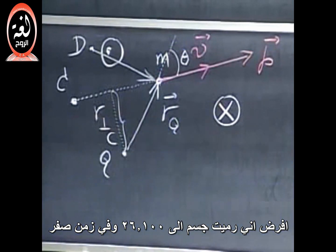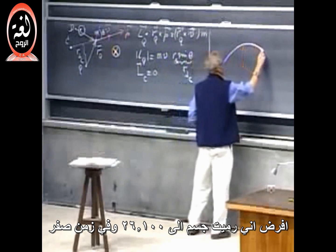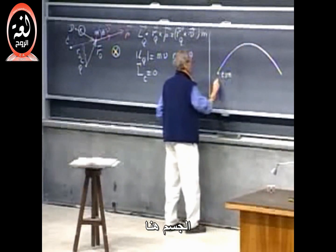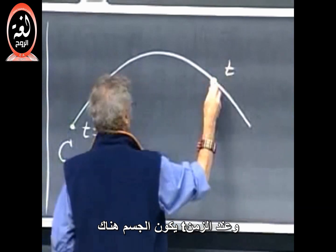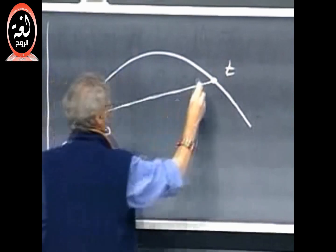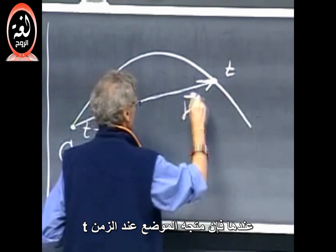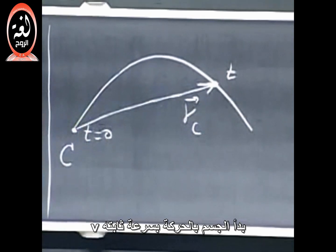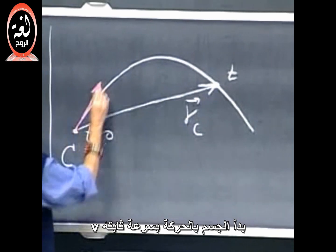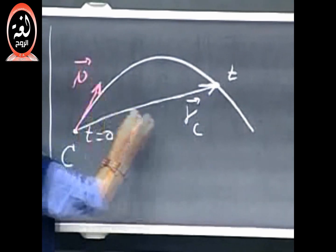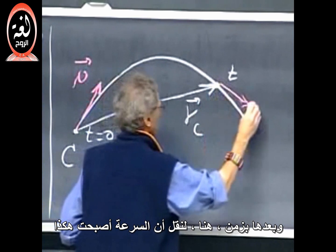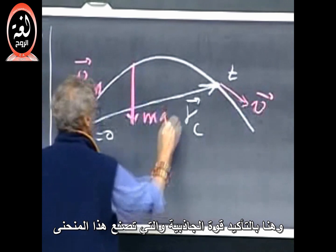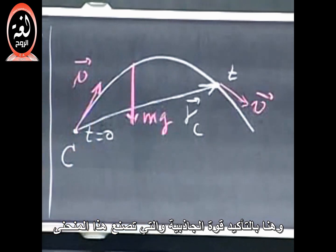Suppose I throw up an object, 26.100, and at time t equals zero, the object is here, and at time t, the object is there. So this, then, is the position vector at time t. The object starts off with a certain velocity V, and a little later here, the velocity is like so. And there is, of course, a force on it, Mg, which makes this curve.